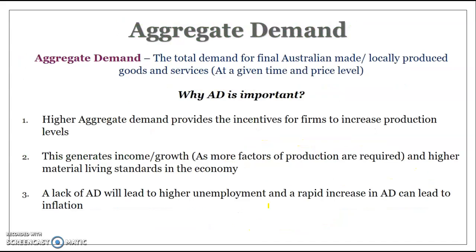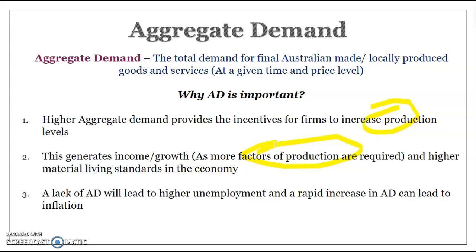Aggregate demand is the total demand for Australian-made goods and services. It's really important for an economy because without demand, it doesn't provide the incentive for firms to produce. If we can't stimulate demand, businesses will produce less, people can't generate income because we need fewer factors of production, which leads to high levels of unemployment. Stimulating demand drives production, which stimulates demand for resources and then stimulates incomes.